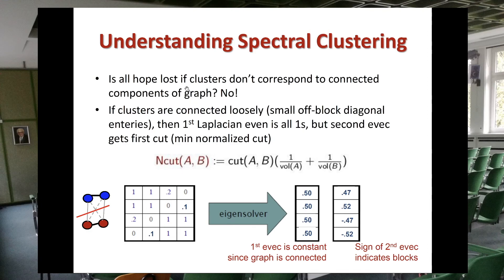Is all hope lost if clusters don't correspond to connected components of the graph? No — if clusters are loosely connected, meaning you have small values outside the main diagonal rather than zeros, the first eigenvector will show the same constant number and won't give much discriminating information. But in the second eigenvector you will see positive and negative values, allowing you to say all negative points belong to one group and all positive points belong to another.